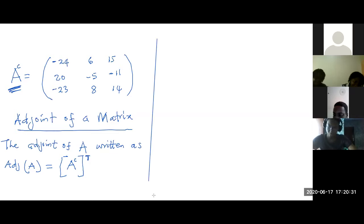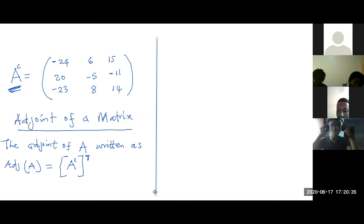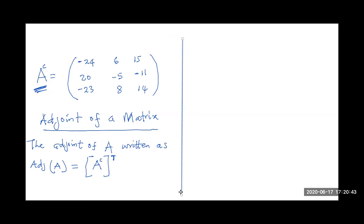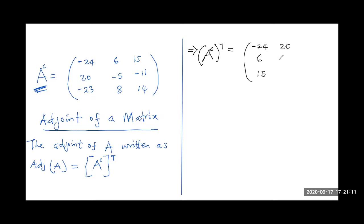Remember that the original matrix is A, while this is the matrix of cofactors, and when you transpose the matrix of cofactors you will have the adjoint of matrix A. So for this question, we can proceed to find the adjoint. Taking the transpose — changing the rows to columns — the first row becomes the first column: minus 24, 6, and 15. The second row becomes the second column: 20, minus 5, and minus 11. The third row becomes the third column: minus 23, 8, and 14. So this is the adjoint of A.